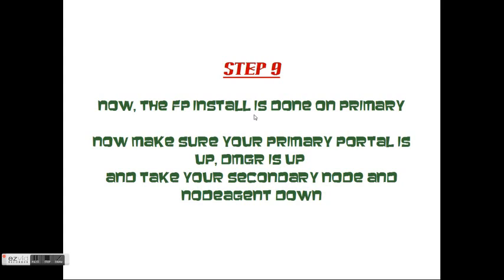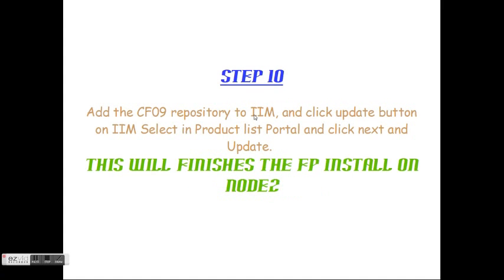The fix pack installation is done on the primary node. Make sure your primary node portal is up and the Deployment Manager is up. Now take your secondary node and secondary node agent down. Add the CF09 repository to your secondary node IIM and click the update button on IIM, select the product as portal, click next, next, and click update. This will finish the fix pack installation on node 2.